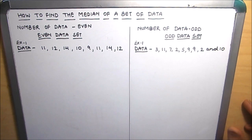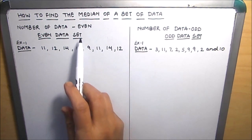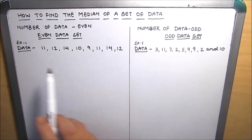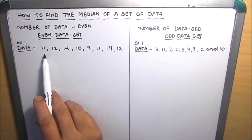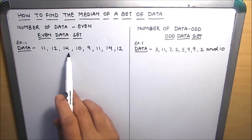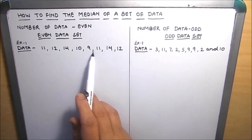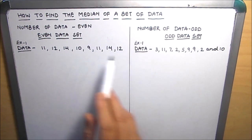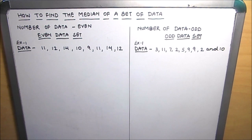First, we will see the data set in which the number of terms is even. Here I have taken an example of a data set with the following data: 11, 12, 14, 10, 9, 11, 14, 12. This is our data set. Now we need to find the median for this data set. The first step is to arrange the data in ascending order.